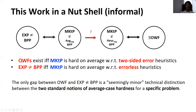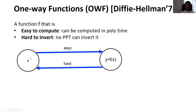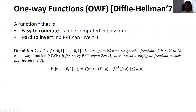The notion of two-sided error and errorless average case hardness are the two standard notions used in complexity literature. Therefore, the only gap between the existence of one-way functions and EXP not equal to BPP is a seemingly minor technical distinction between two standard notions of average case hardness for a specific problem. To introduce our main theorem, let us first introduce the notion of one-way functions. A function F is one-way if it is easy to compute — F should be computable in polynomial time — and F is hard to invert, meaning no PPT machine can invert F.